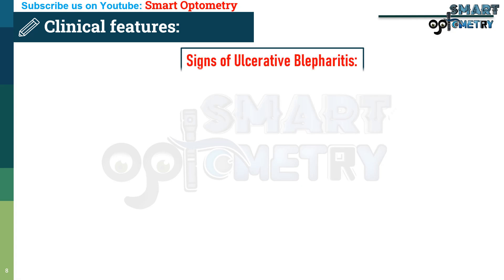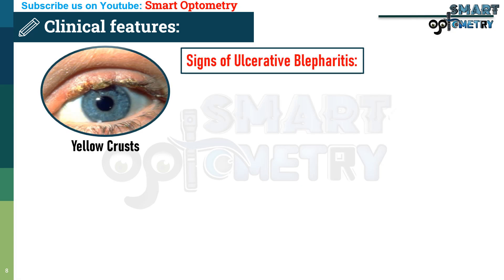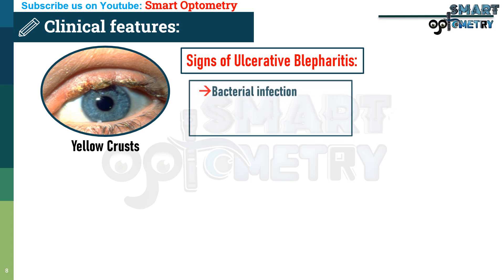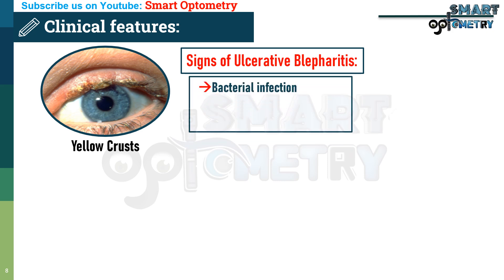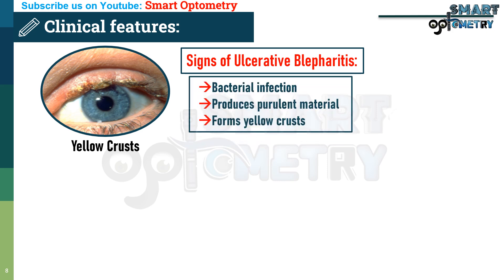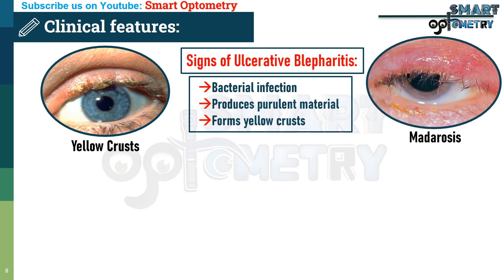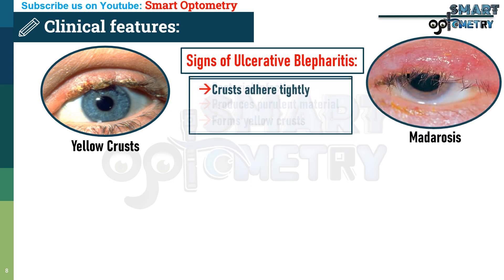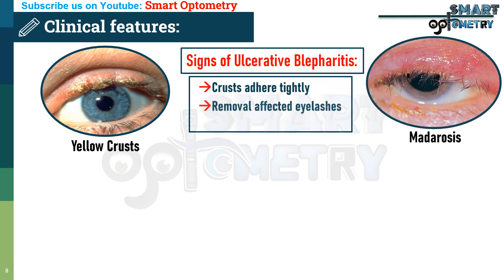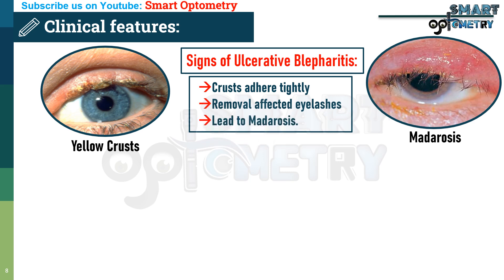Signs of ulcerative blepharitis include yellow crusts with matting at the roots of the eyelashes — bacterial infection produces purulent material that forms yellow crusts, which stick the eyelashes together. Madurosis also occurs as crusts adhere tightly, and their removal can pull out affected eyelashes.